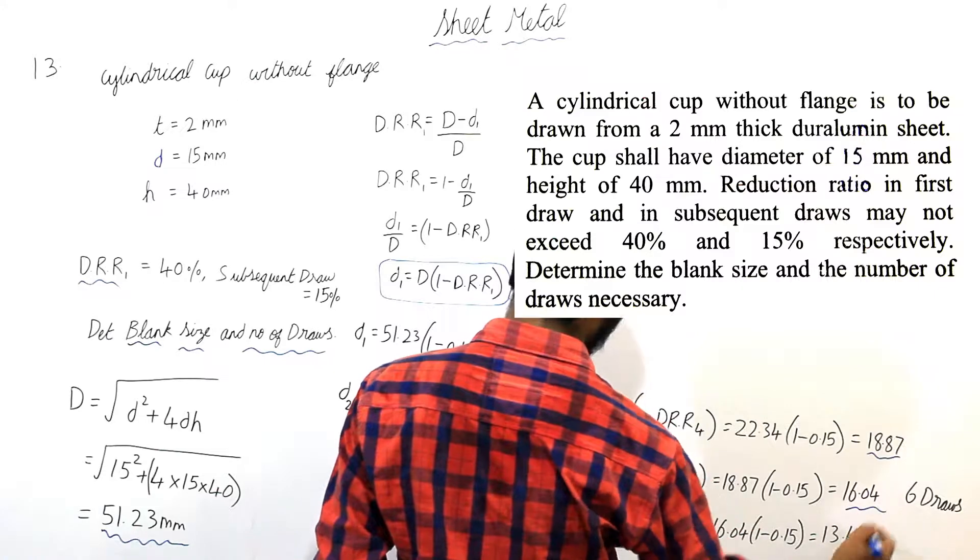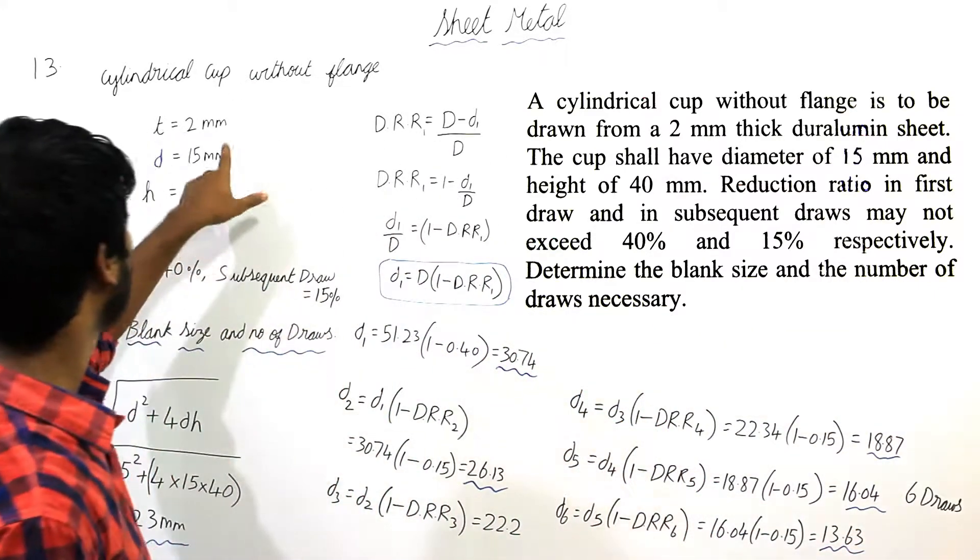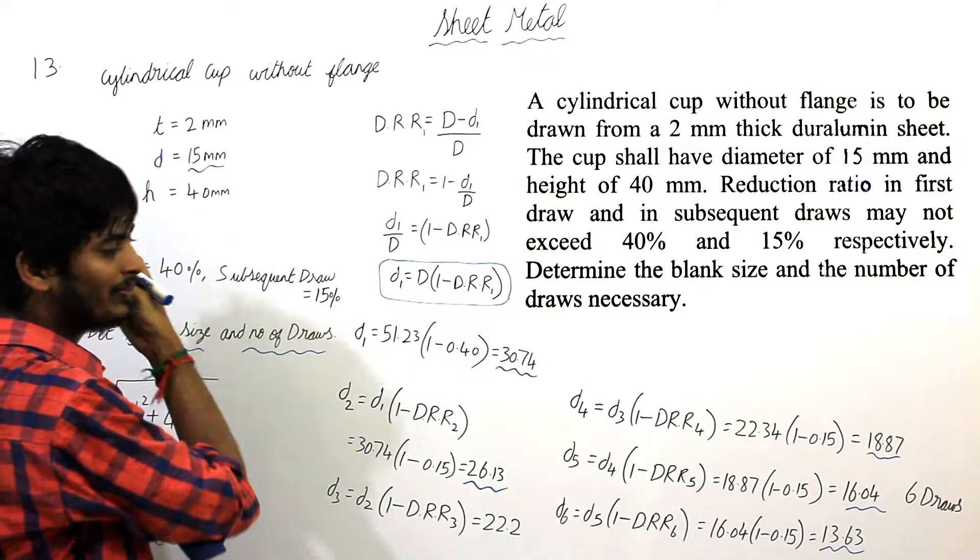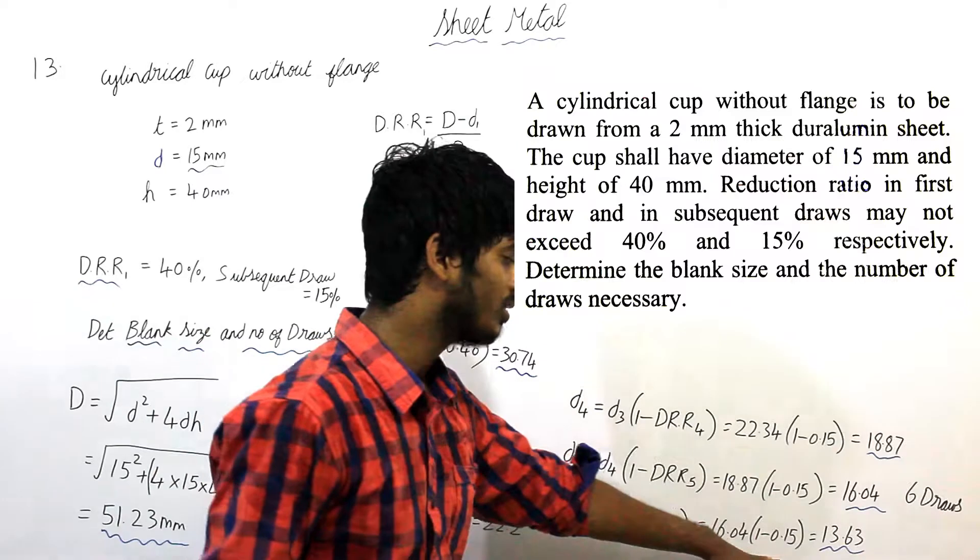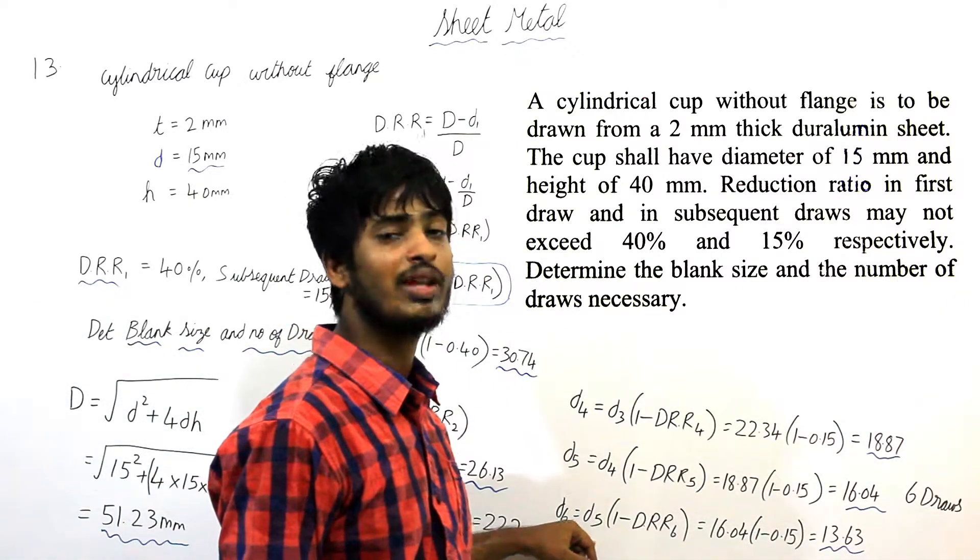Same way for d5 and d6. I am getting 13.63. If you compare the final diameter, that is 15mm, we have to stop here. Because the final diameter is greater than the draw which is required.